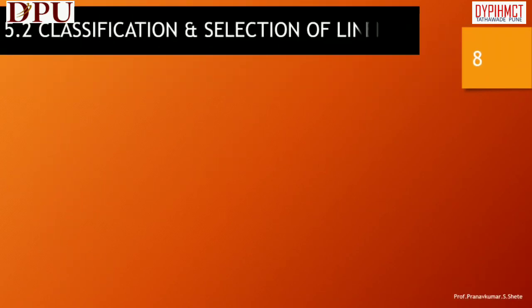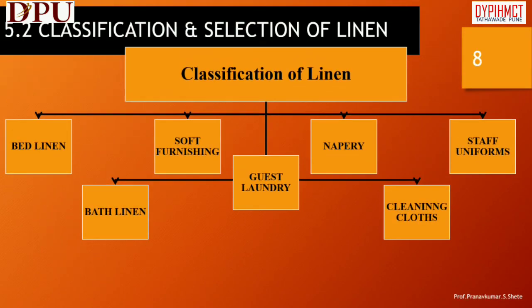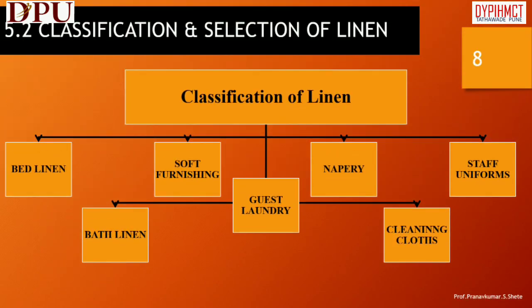Classification of linen includes the following categories: Bed Linen, Bath Linen, Soft Furnishing, Guest Laundry, Napery, Cleaning Cloth, and Staff Uniforms.